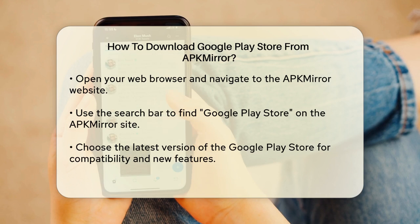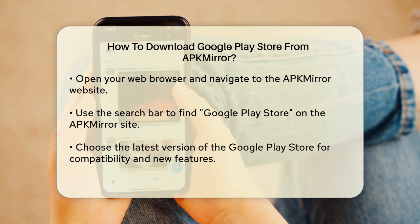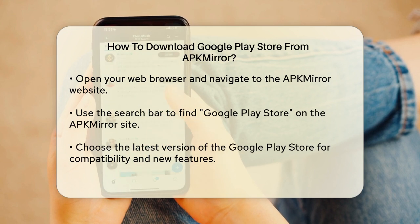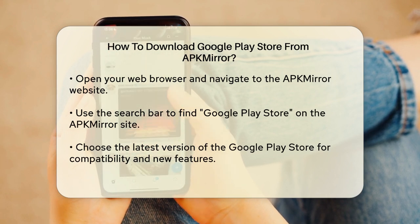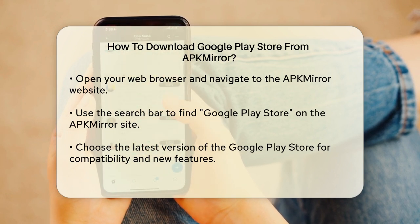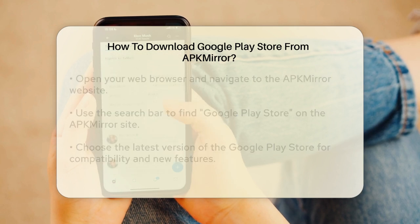Next, open your preferred web browser and visit the APKMirror website. Once on the site, use the search bar to type in Google Play Store. This will lead you to a list of available versions of the application. It is advisable to select the latest version to ensure compatibility and access to the newest features.